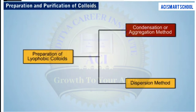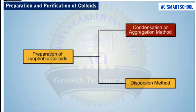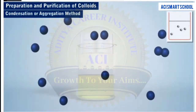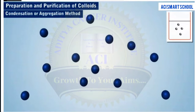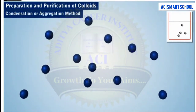The two categories are condensation or aggregation methods, and dispersion methods. We will first discuss the condensation or aggregation methods. As the name suggests, in condensation methods, the smaller particles of the dispersed phase aggregate to form larger particles of colloidal dimensions.